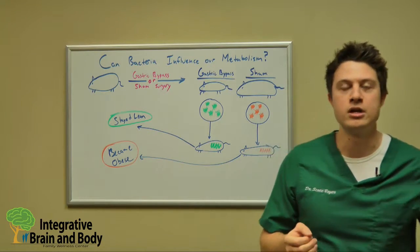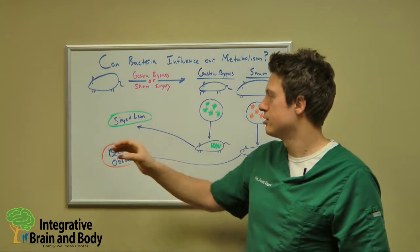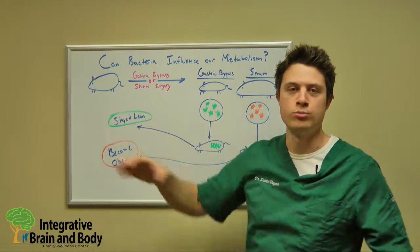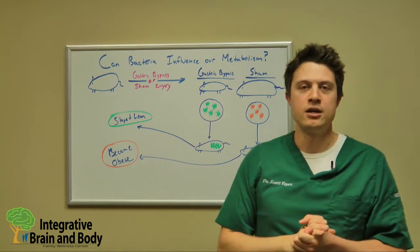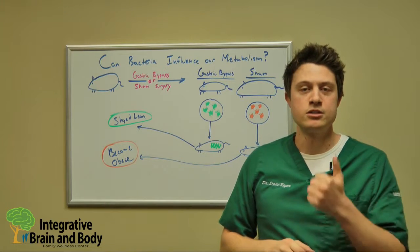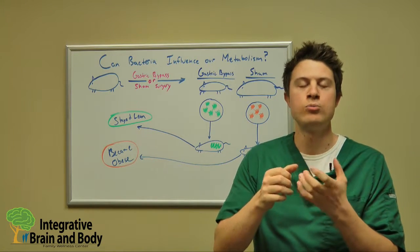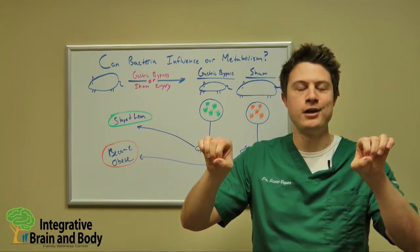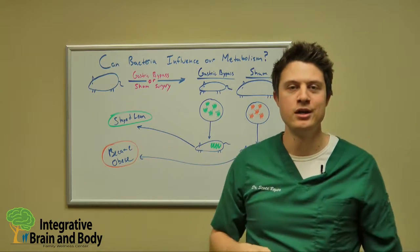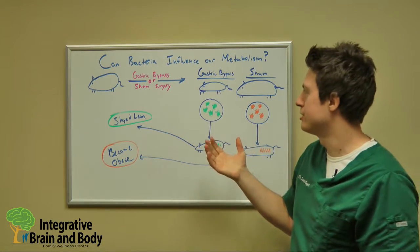They designed a study using mice. They took a group of obese mice and gave them either gastric bypass or a sham surgery, meaning they opened them up, took apart their intestine, and reattached it.